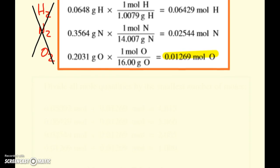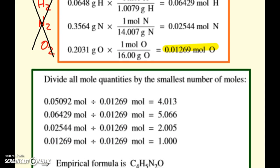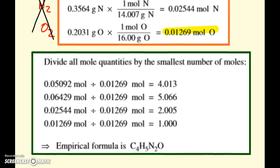And so then, again, what we'll do is we divide all of the moles by the smallest, and we see that it comes out to nice whole numbers, 4, 5, 2, 1. So my empirical formula is 4 carbons, 5 hydrogens, 2 nitrogens, 1 oxygen.